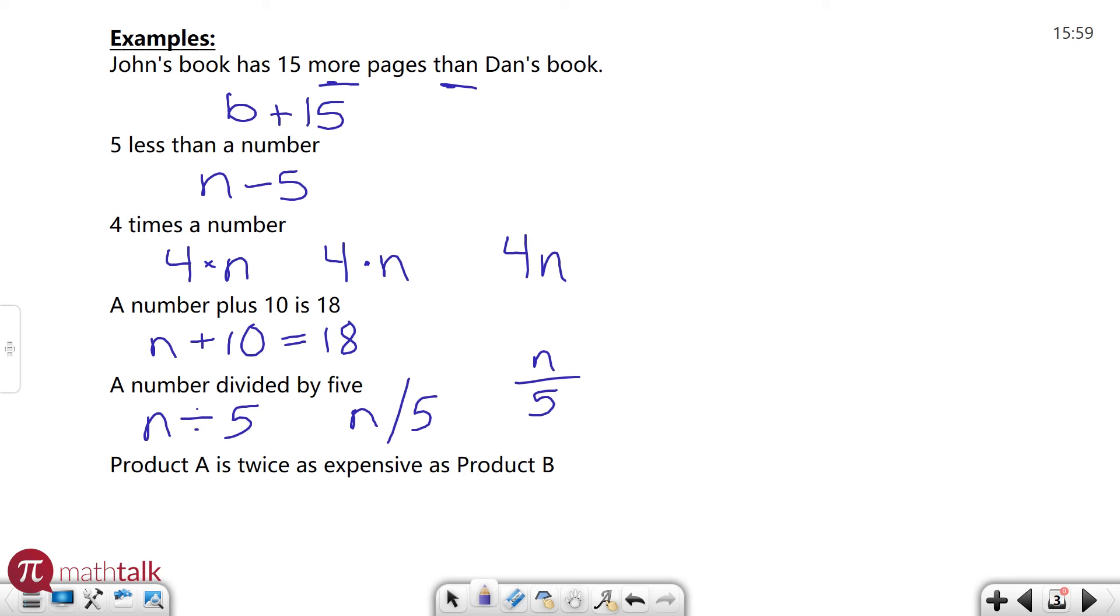And then the last one says Product A is twice as expensive as Product B. So there's a couple of expressions here. Product A, which I'll use A, 'is'—remember from the last one 'is' means equals. 'Twice'—remember I said if you're doing something twice you're doing it two times. So I'm going to take the number two, twice as expensive as Product B. So twice B or 2B. So now you have another equation: A = 2B.